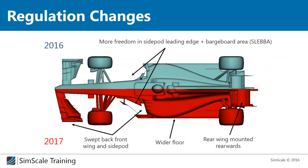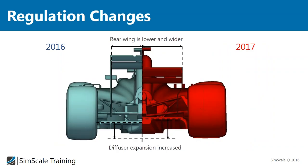Looking at the diffuser and underfloor — another major regulation change. The rear wing changed significantly in size and position: in the 2016 model the rear wing was not very wide but much higher, whereas the new cars have lower, wider rear wings mounted further back. The diffuser expansion also increased — the height of the diffuser profile changed, meaning the air expands much more. In theory and also in practice, this will add additional downforce to the race car.